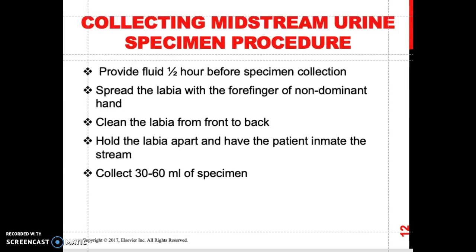For collecting a midstream urine specimen: provide fluids half an hour before the specimen is collected. Spread the labia with the forefingers of the non-dominant hand and clean the labia from front to back to prevent infection. Hold the labia apart, have the patient initiate the stream, and collect about 30 to 60 ml of urine.